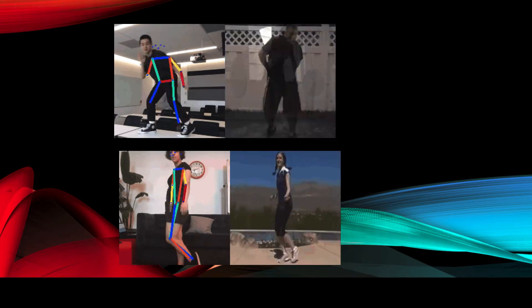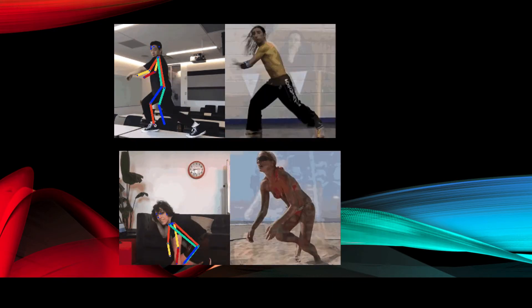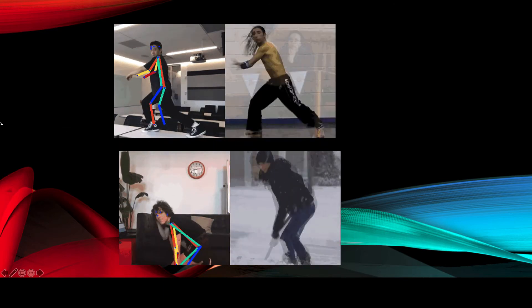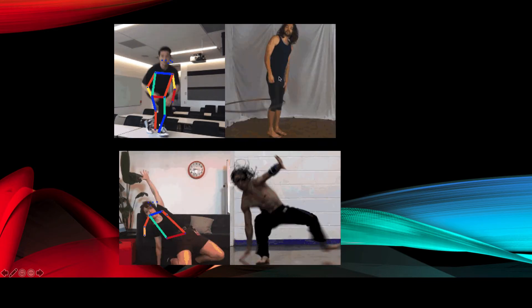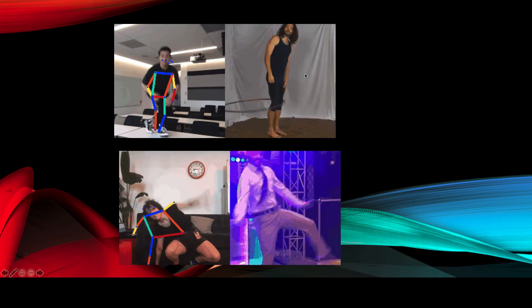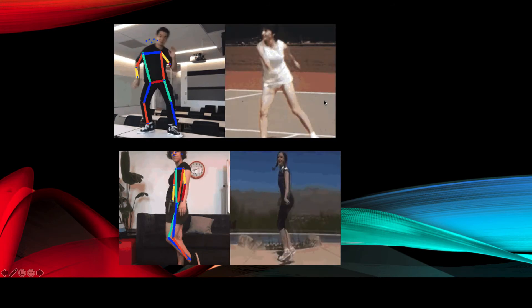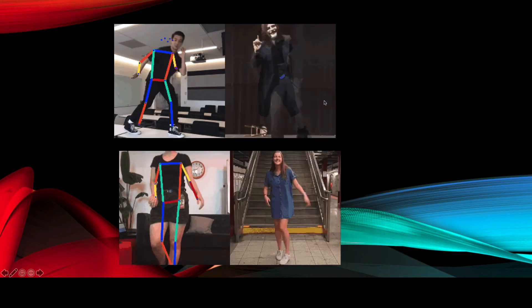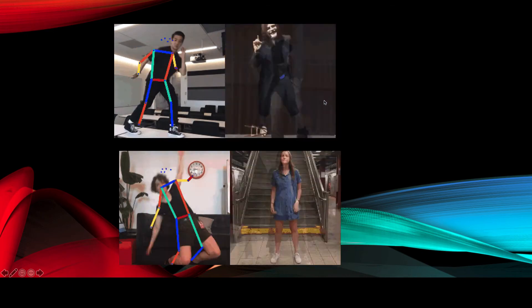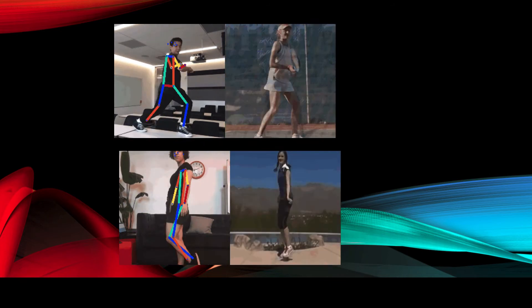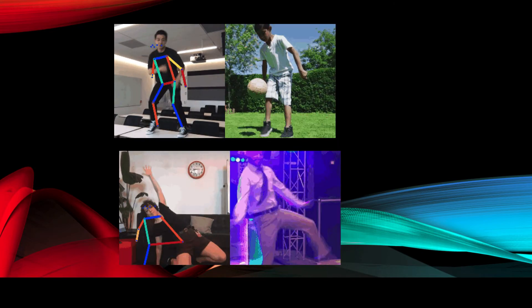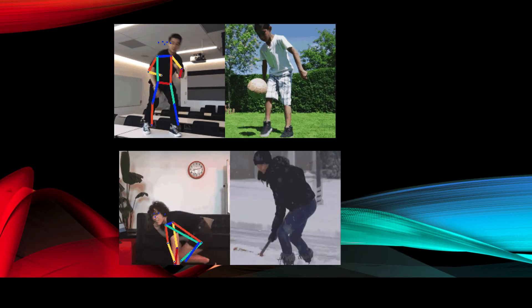Here's an example application called Move Mirror, a very famous app where you imitate the positions of famous celebrities or athletes to make sure you are doing correct postures. For example, if someone is exercising, it ensures they're in the right position to avoid injuries. When dancing, the application tells you whether your pose is correct or you are moving in the correct direction. Move Mirror is a very popular application.